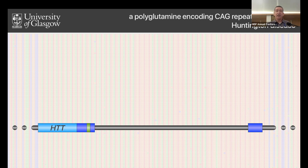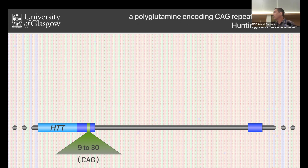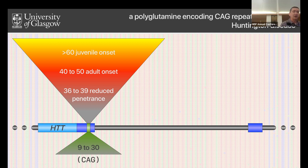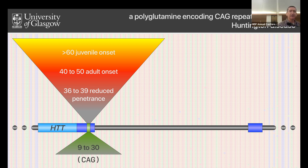This is another disorder associated with the expansion of a simple sequence repeat. CAG repeats in exon 1 of the Huntington gene vary from about 9 to 30 in the general population, and from 36 up to 100 or so in the patient population. There's a reduced penetrance range from about 36 to 39. Pretty much everybody with 40 repeats, if they live long enough, will develop symptoms. The vast majority of patients have between about 40 and 50, but those who inherit up into the 50s, 60s, and 70s have a juvenile onset form.